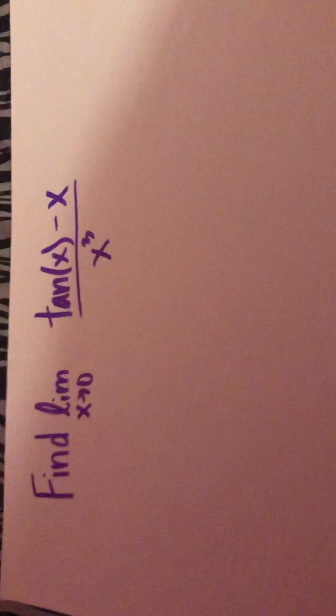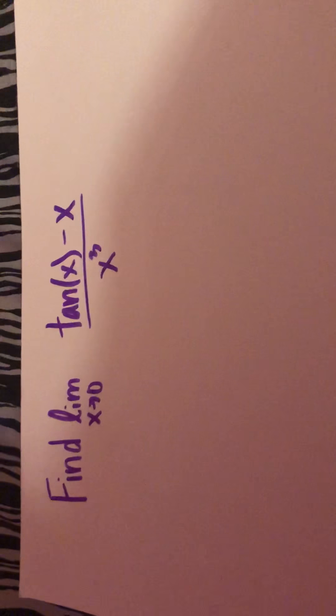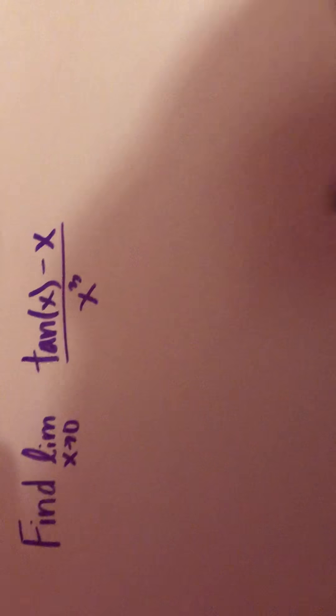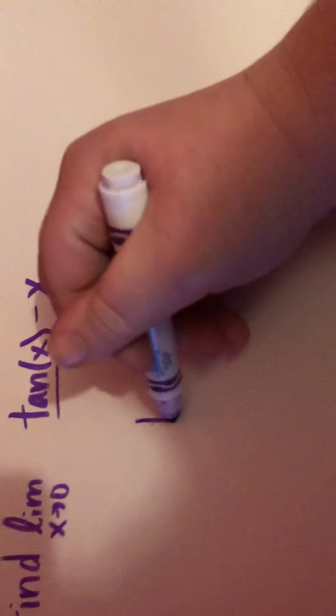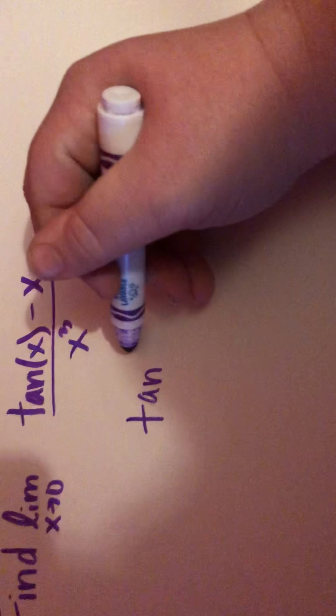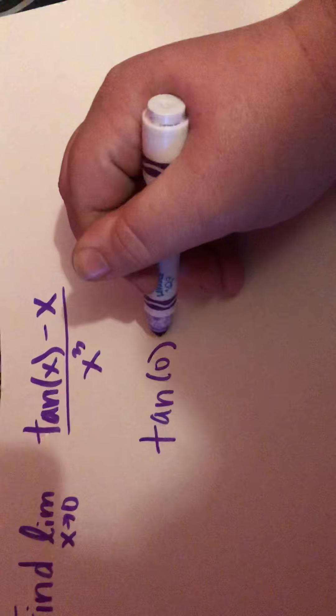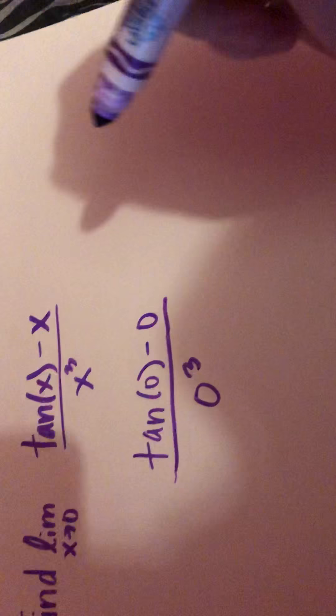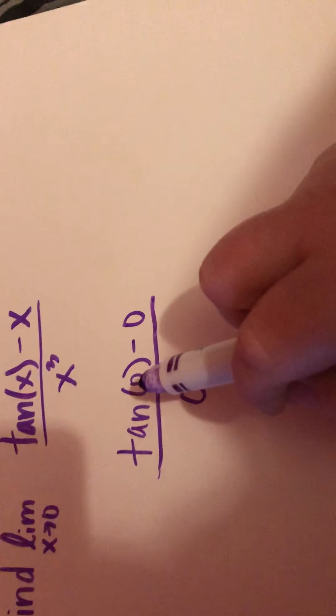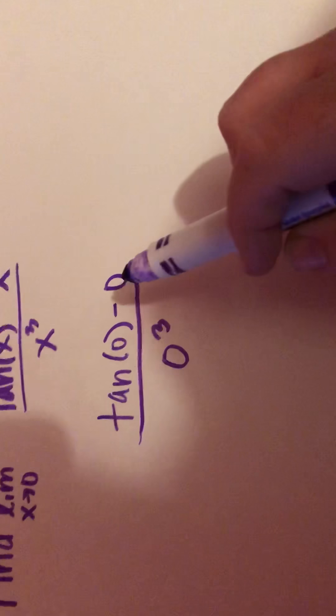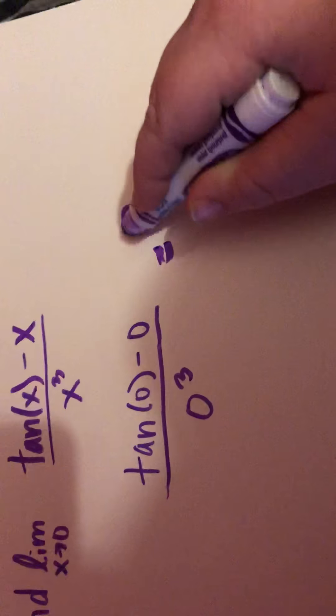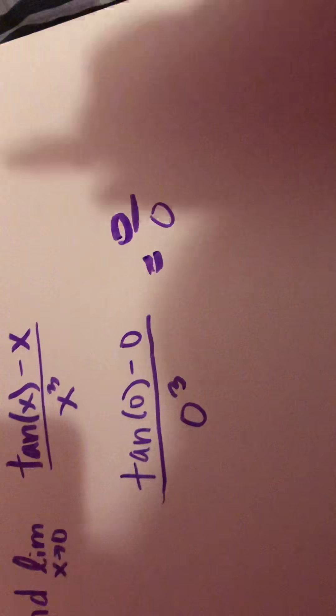Find the limit as x approaches 0 for tan of x minus x over x cubed. So first, what we're going to do is plug in 0, substitute that. So tan of 0 minus 0 over 0 cubed, or tan of 0 just equals 0, minus 0 equals 0, 0 over 0. Zero over zero is an indeterminate form.